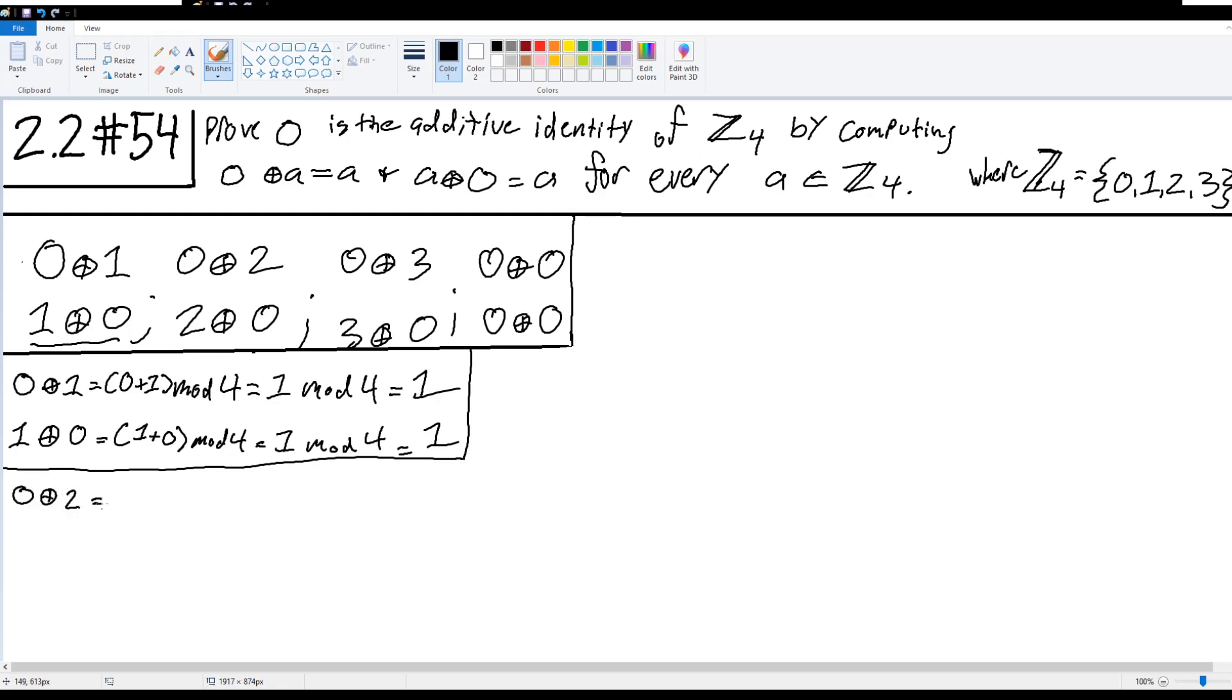0 modular addition 2 equals 0 plus 2 mod 4, which equals 2 mod 4, and 2 does not go into 4 fully, so we're left with 2. And 2 modular addition 0 equals 2 plus 0 mod 4, which equals 2 mod 4, which equals 2. So on to the next pair.